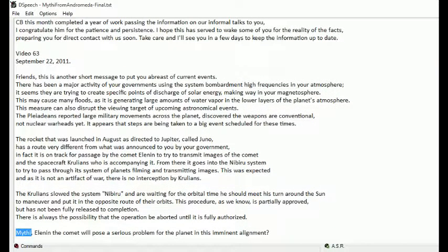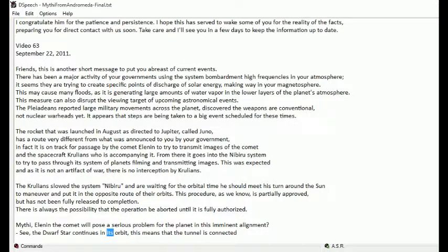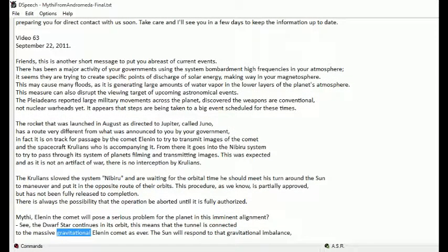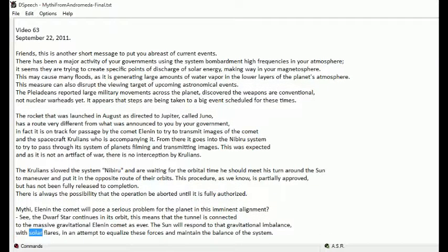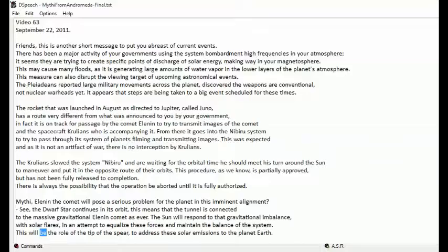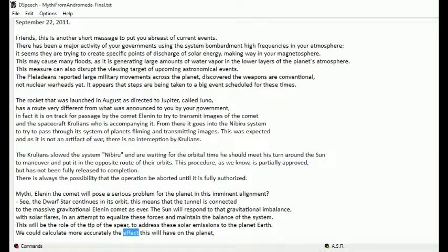Mythi, Elenin the comet will pose a serious problem for the planet in this imminent alignment. See, the dwarf star continues in its orbit. This means that the tunnel is connected to the massive gravitational Elenin comet. As ever, the sun will respond to that gravitational imbalance with solar flares in an attempt to equalize these forces and maintain the balance of the system. This will be the role of the tip of the spear to address these solar emissions to the planet Earth. We could calculate more accurately the effect this will have on the planet.